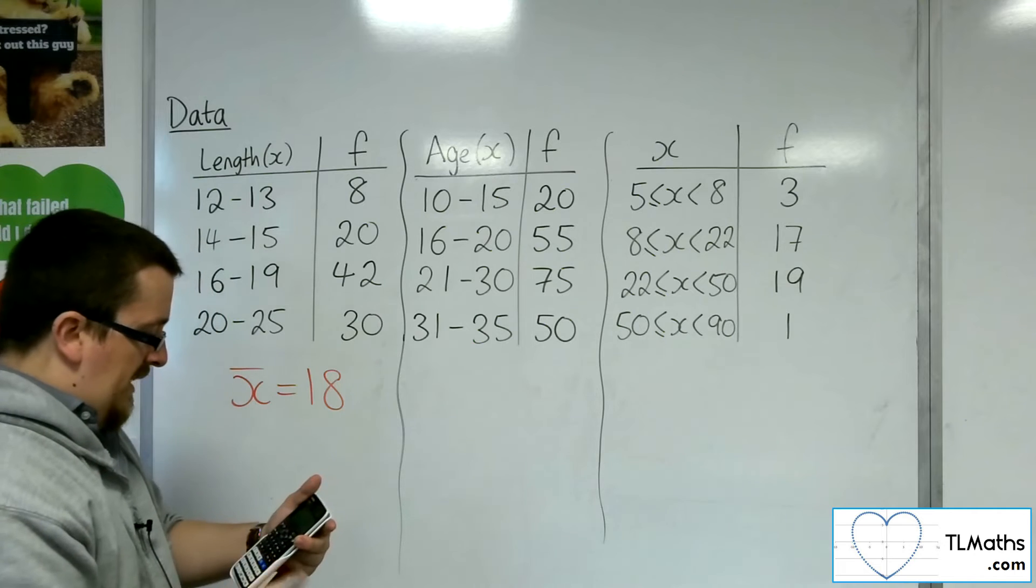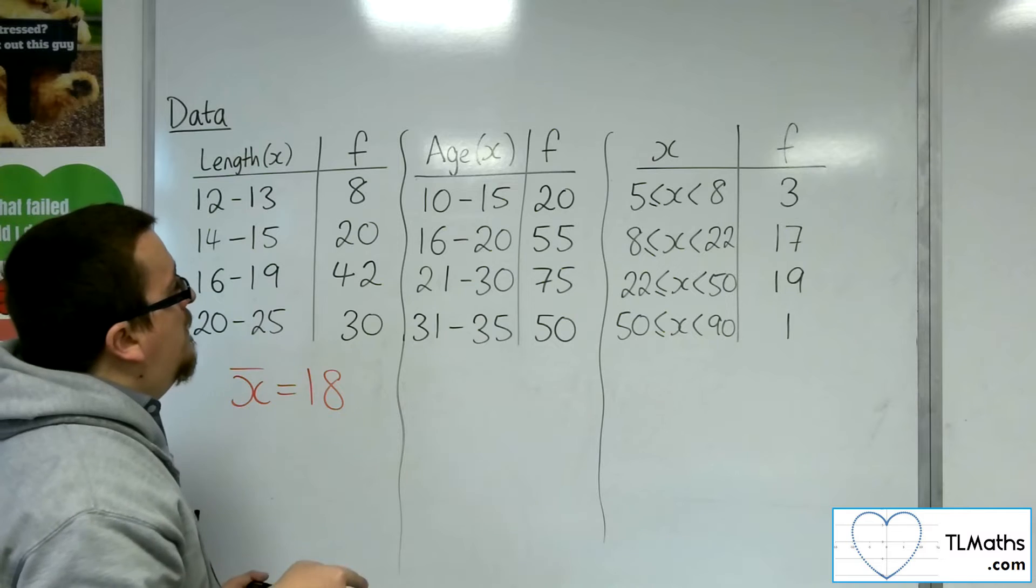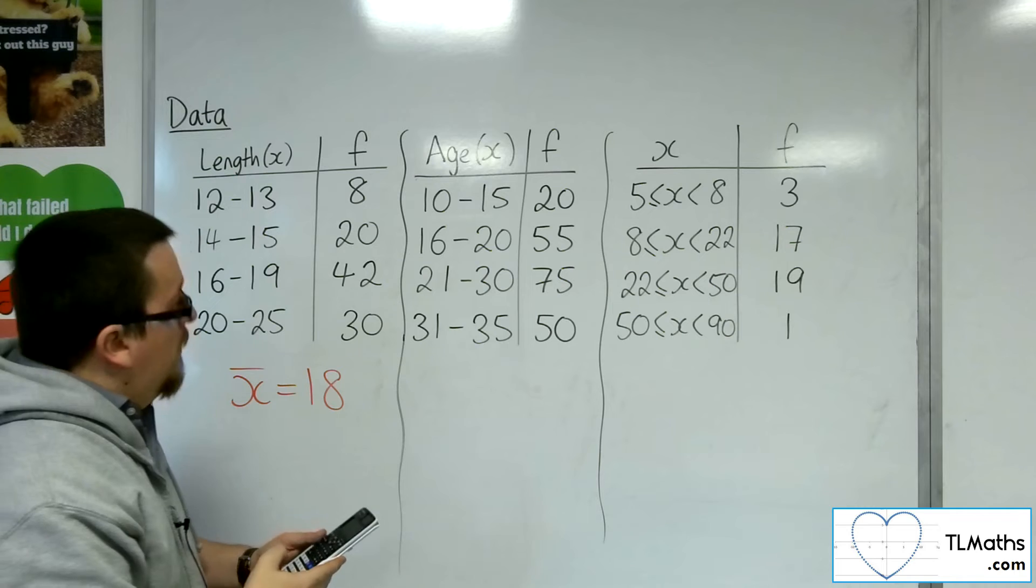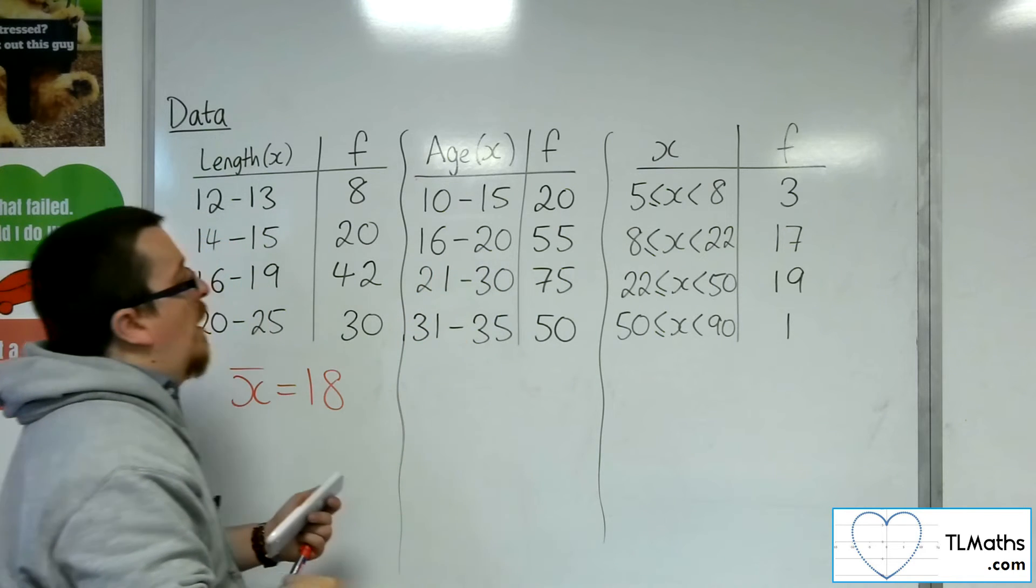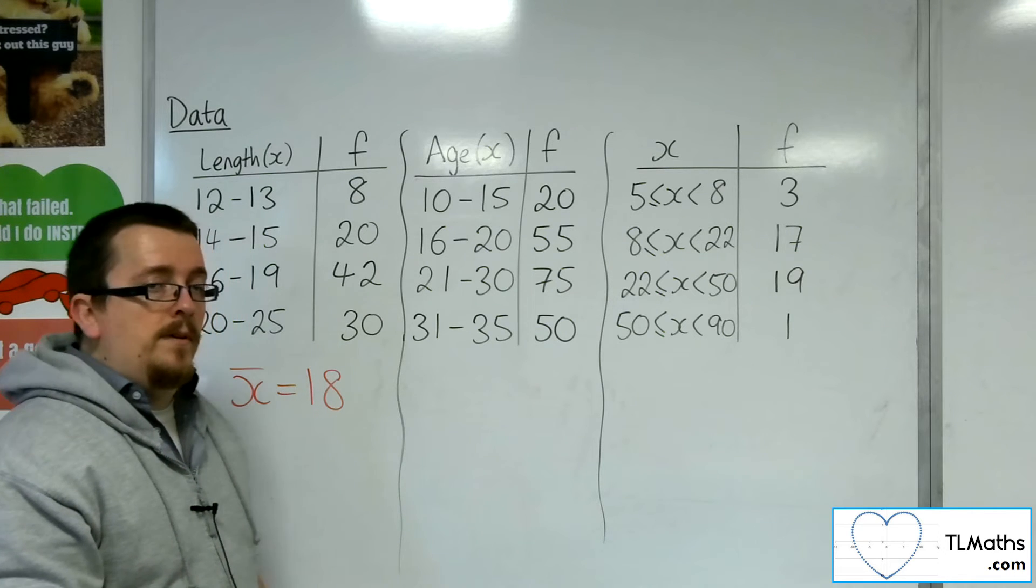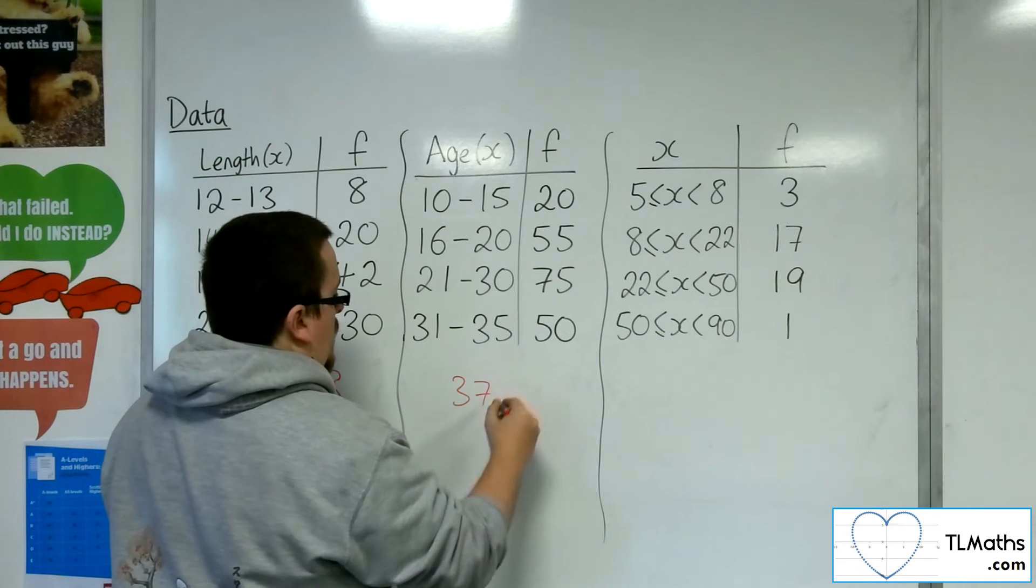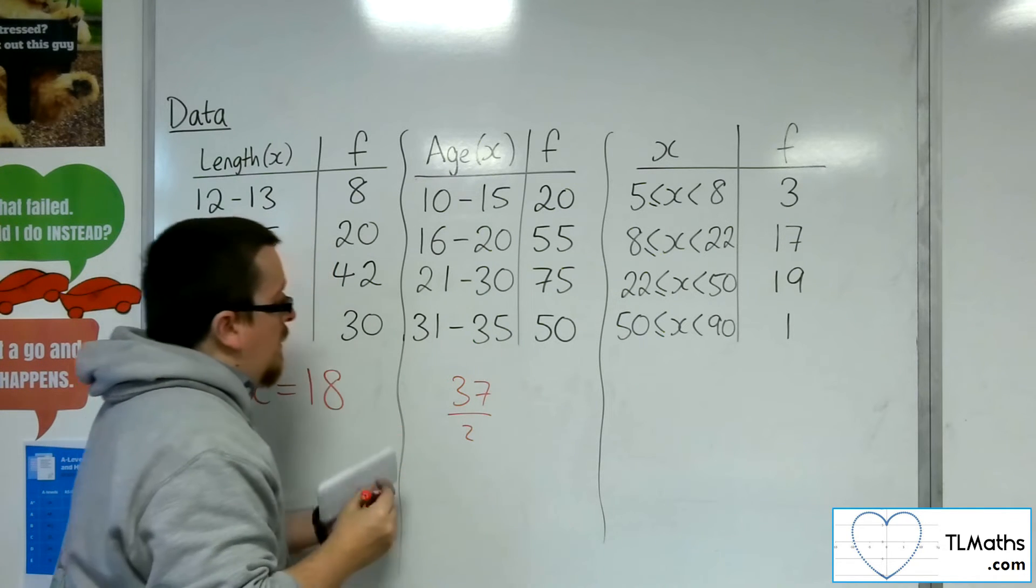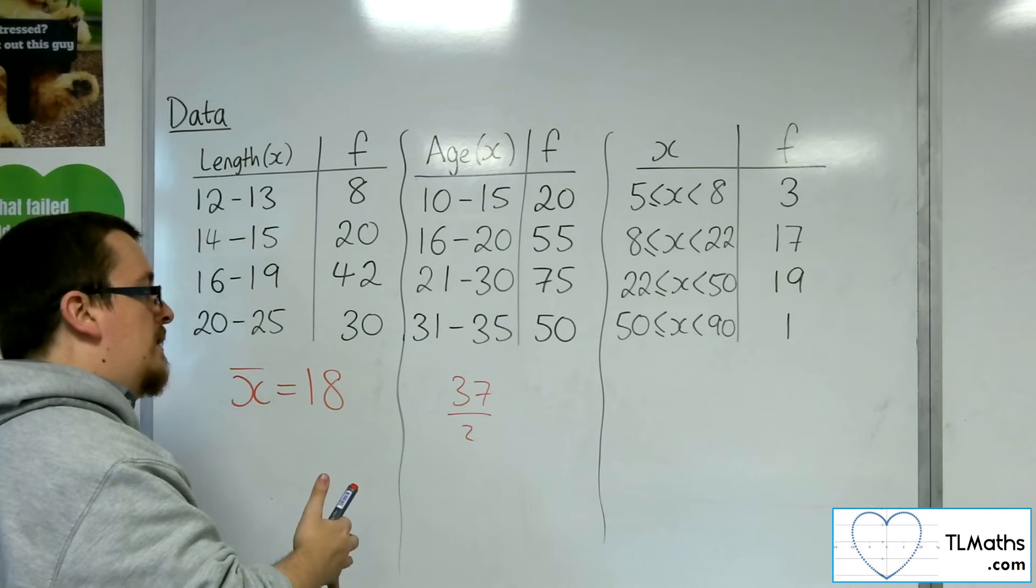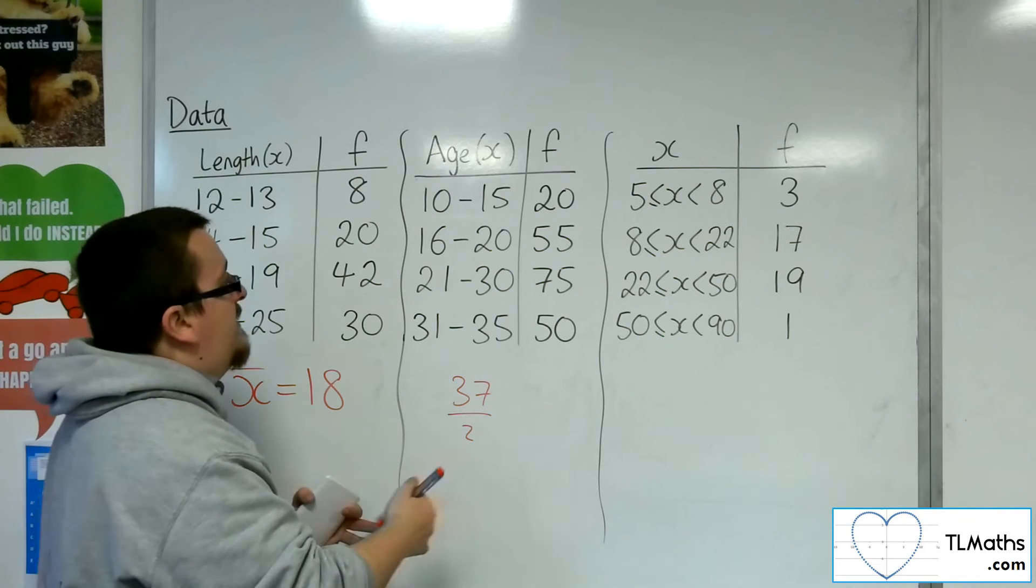So we've got to take account of that. Back in the menu, number 6, number 1 for one variable. The x values are the midpoints again, 10 to 16 would be 13. Then we've got 16 to 21, so 16 plus 21 is 37. Half of that, so 37 divided by 2, gets us 18.5.